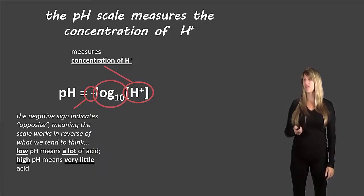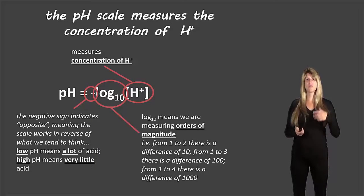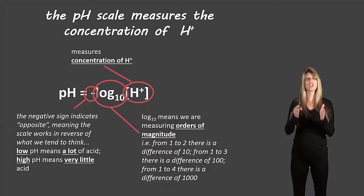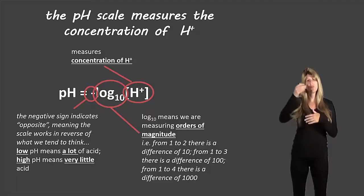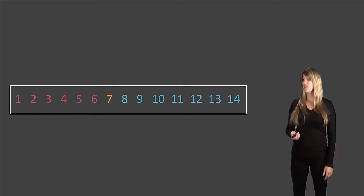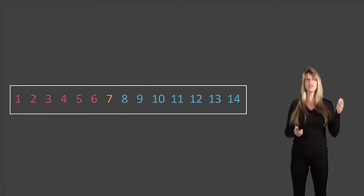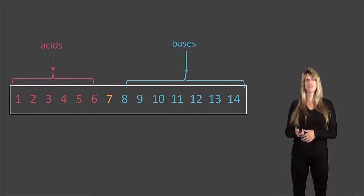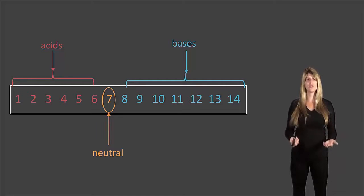And then the logarithm that we have here indicates that we're dealing with orders of magnitude. So the difference on a pH scale between 1 and 2 is actually 10. And the difference between 1 and 3 is actually 100, and the difference between 1 and 4 is 1000, and so on. So we're dealing with orders of magnitude. So if we take a look at our pH scale, it goes from 1 to 14. Everything from 1 to 6 is an acid, and the lower the number the more acidic. And everything from 8 to 14 is a base, the higher the number the more basic. And 7 is a neutral substance.